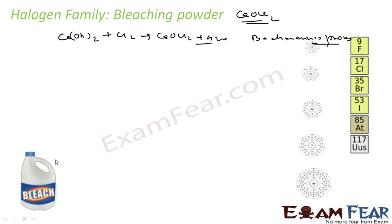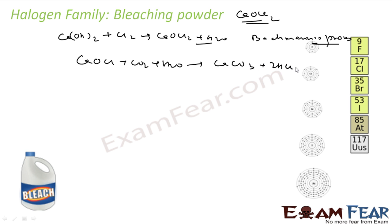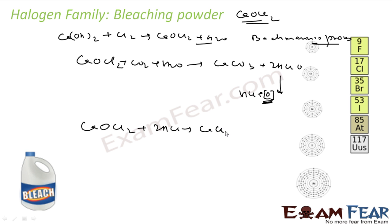The properties of bleaching powder: it has a very strong smell. In moist air, it decomposes — CO₂ and water from the air cause it to decompose to form calcium carbonate and hypochlorous acid (HClO). The HClO gives HCl and nascent oxygen, and this nascent oxygen is responsible for the bleaching action. Bleaching powder also reacts with acid to form CaCl₂, chlorine gas, and water.